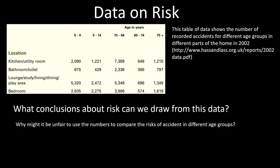Why might it be unfair to use the numbers to compare the risks of accidents in different age groups? We've got 5,320 accidents in the lounge for 0–4 year olds, and 5,348 in the lounge for 15–64 year olds. At first glance you might think these numbers are very similar, meaning the risk is the same for those age groups. But think about how many 15–64 year olds there are compared to 0–4 year olds — obviously way more.